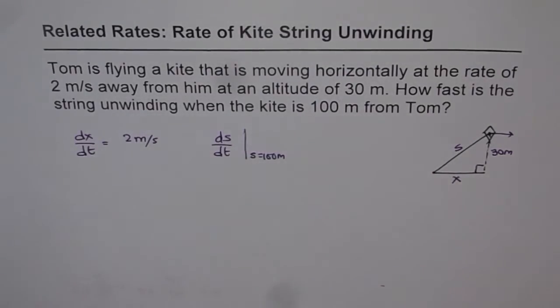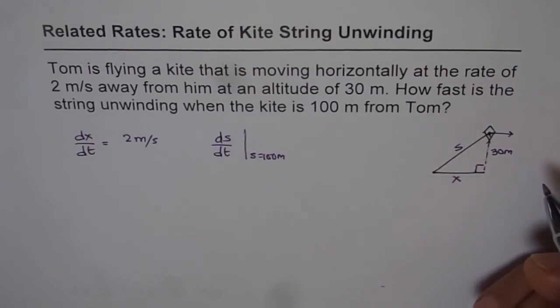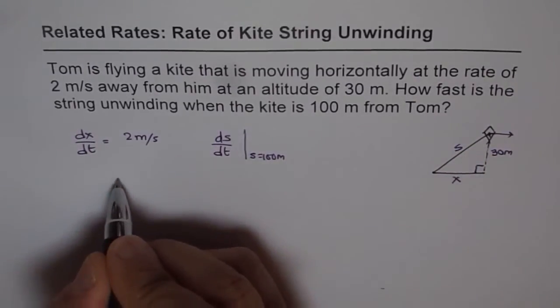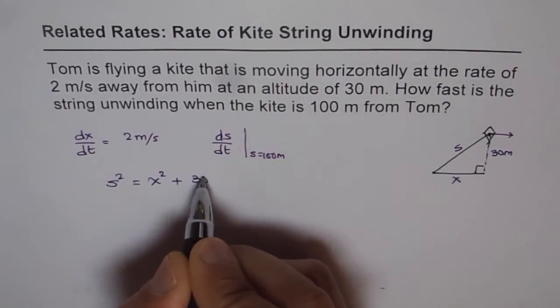Now, to find this, we just need to relate these three. How can you relate? Pythagorean theorem. So we know s² = x² + 30².